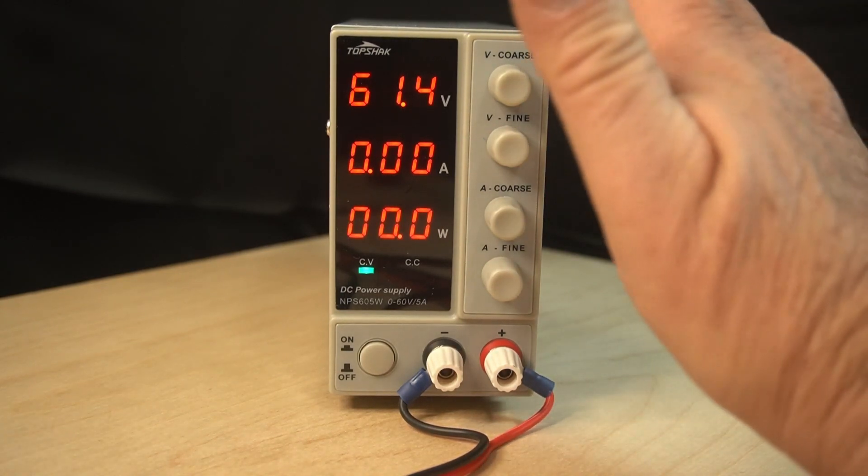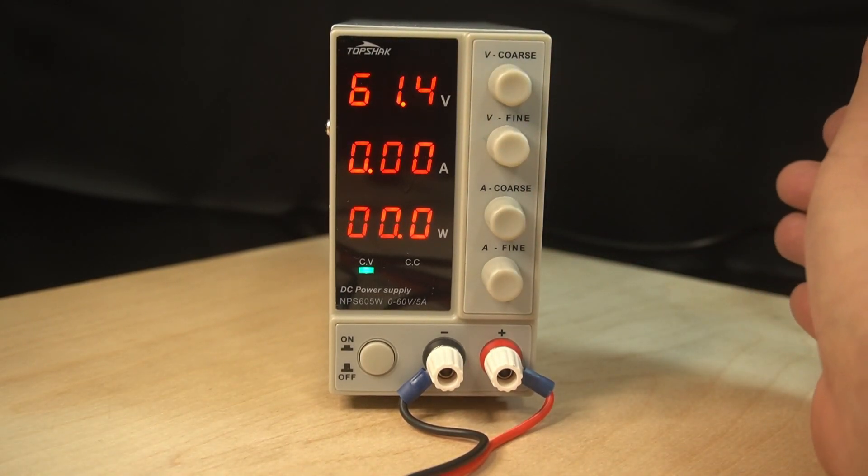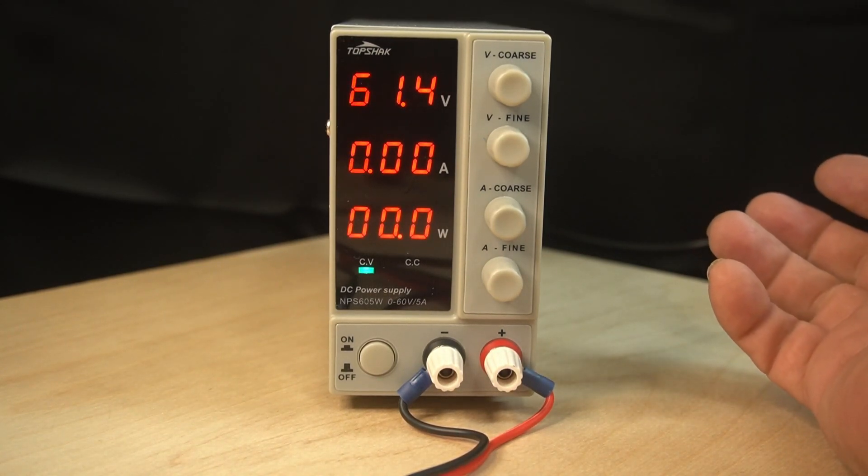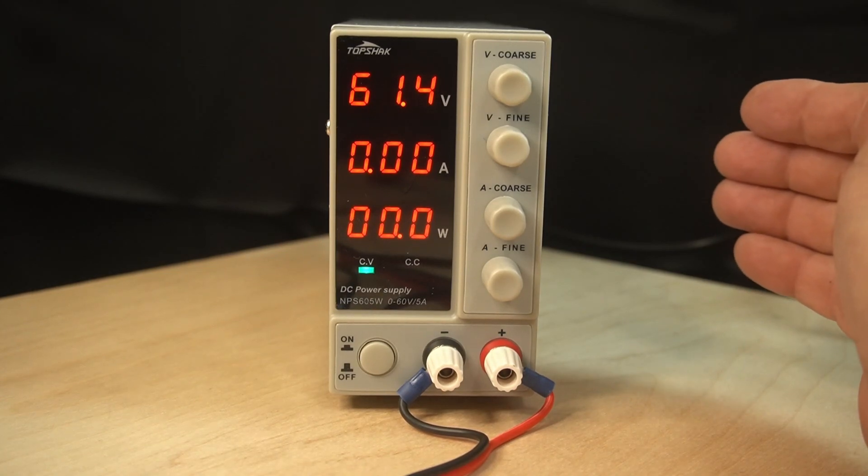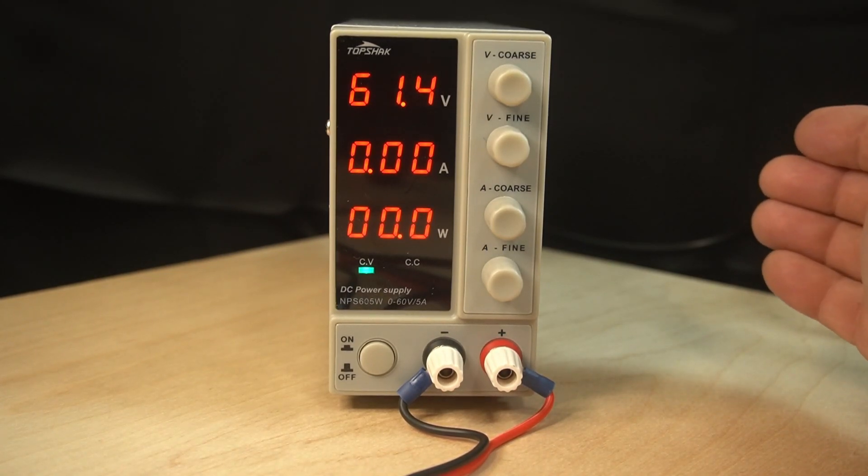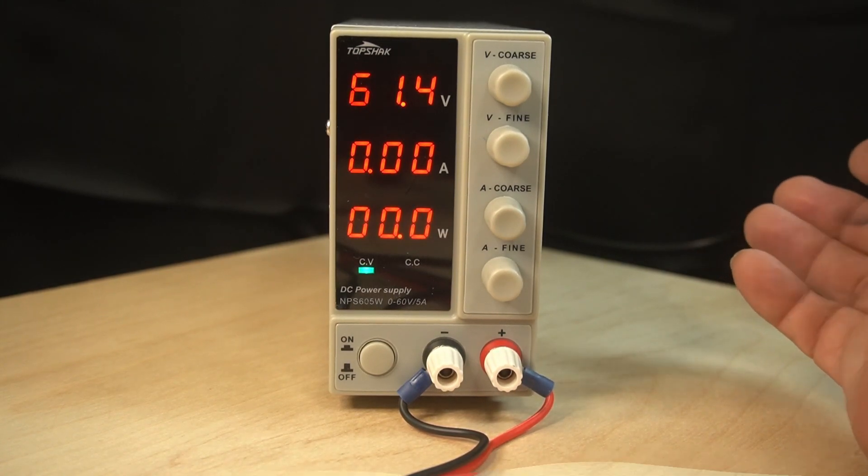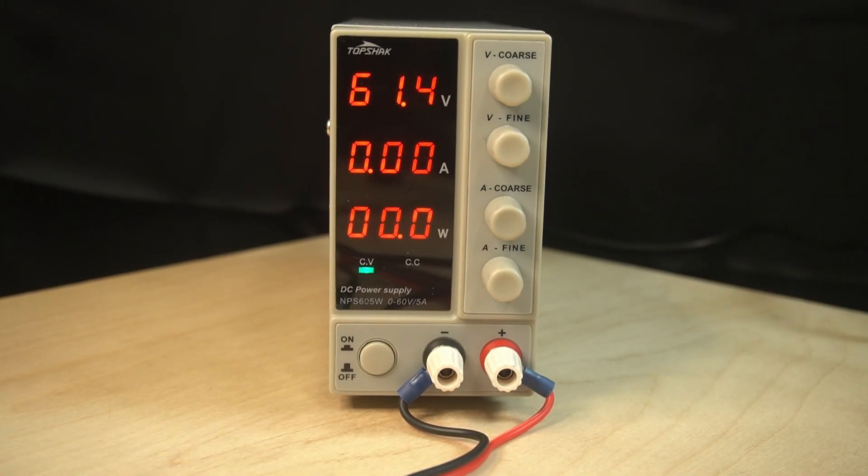So it's a pretty nice little compact benchtop supply. Now, this can be used for a lot of things like say you're doing some guys will actually adjust parameters on the radios. And sometimes you need an exact voltage. And this is a way of doing that. Let me get my multimeter. We'll hook it up to it and see how it compares.